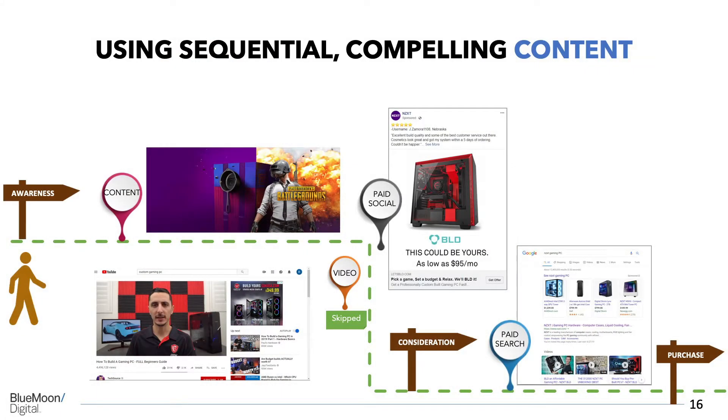Make sure that as you're going through any display program you're using sequential and compelling content. You should treat the 50% viewer differently than the 100% viewer, so make sure as you're creating your creative strategy that you have different assets for those different pivot points throughout the customer journey. If she's somebody who's really actively engaged and loyal to your brand, give her something that really matters to her — maybe send her an email with a supplemental display retargeting campaign. If she's just discovering your brand, maybe give her some how-to videos or compelling review videos that really engage her and tell her about how your brand is relevant to her life.